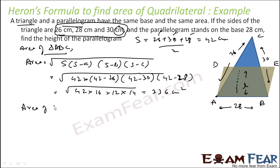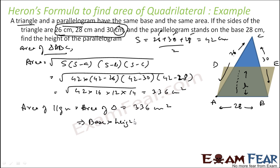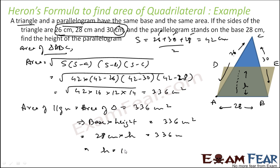So the area of the parallelogram is also 336 cm². The area of a parallelogram is base into height, and the base is 28 cm. Setting 28 into h = 336 and solving, we get h = 12 cm. That is the height of the parallelogram.